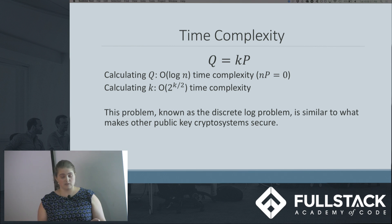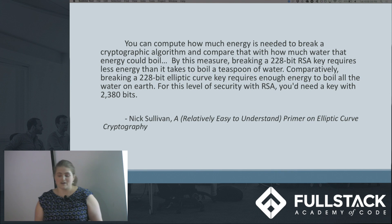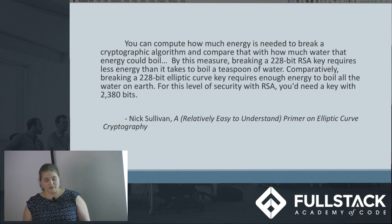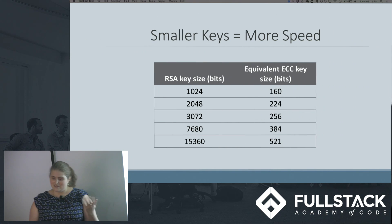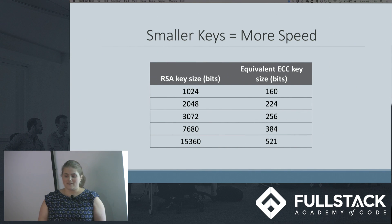The main advantage that ECC has over the earlier systems is key size. Another way to think about these systems is in energy. Breaking a 228-bit RSA key requires less energy than it takes to boil a teaspoon of water. Comparatively, breaking the same bit length curve requires enough energy to boil all the water on Earth.